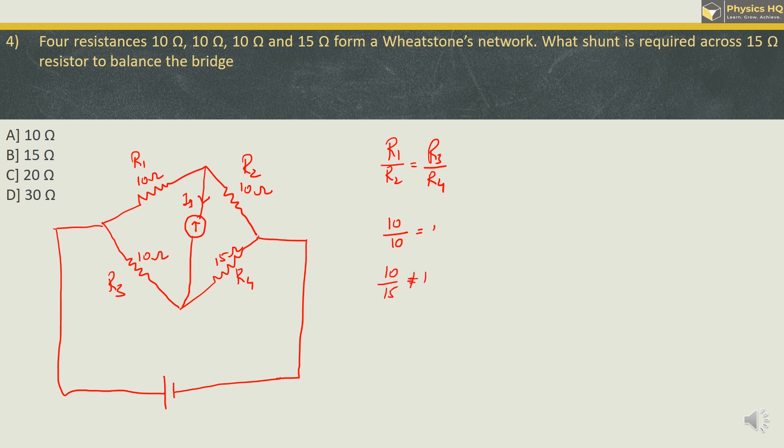So what we need to do is we need to connect a resistance in parallel with this, in shunt with R4, so that the overall resistance of this combination will be equal to 10, so that we can get this ratio of 1 over here. Now let us use the parallel equivalent formula. So parallel equivalent will be 1 upon R plus 1 upon R4 over here. We want the parallel equivalent to be equal to 10 so that the bridge is balanced. R is the unknown resistance that we have to connect, R4 we already know it is 15.